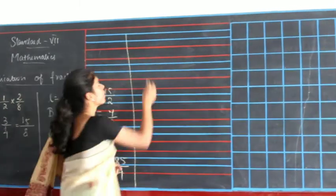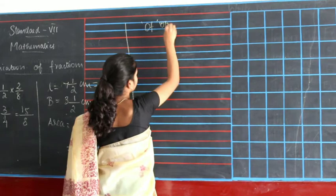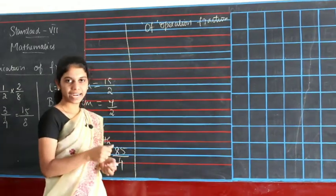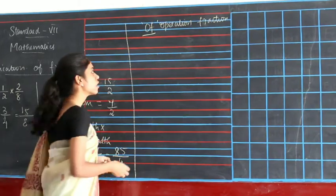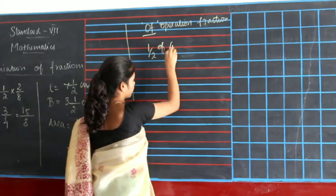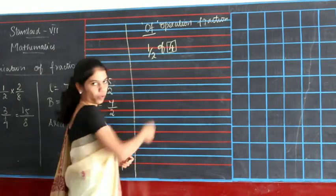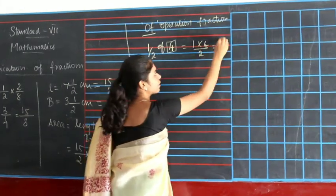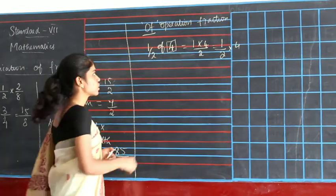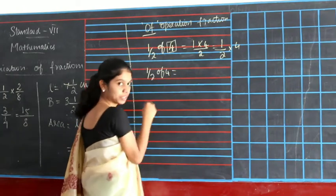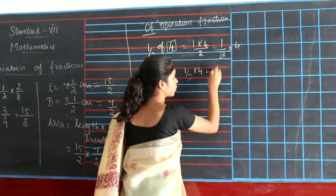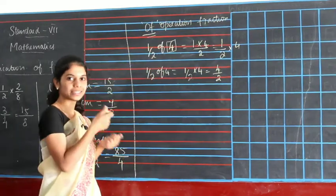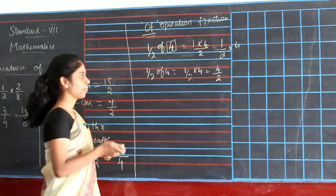We are going to see the 'of' operation of fractions. You might have studied this in 5th standard. For example, 1 by 2 of 4 means 1 into 4 divided by 2. You will write this as 1 by 2 into 4, which equals 4 divided by 2, giving you 2. This 'of' operation in fractions means multiplication.